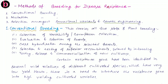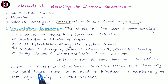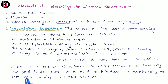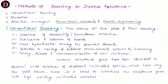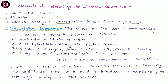In conventional breeding, a number of resistant genes have been identified in several wild relatives of different cultivated or domesticated species. These wild relatives have very low yield — poor in productivity — but have resistance against a particular disease. We have to select the resistance gene from those wild relative plants and introduce it into high-yielding cultivated or domesticated varieties.